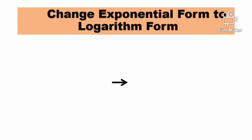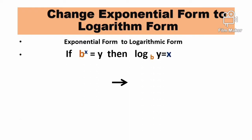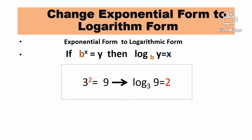Change exponential form to logarithm form. If b raised to x equals y, then logarithm base b of y equals x. Example: 3 squared equals 9, and then logarithm base 3 of 9 equals 2.